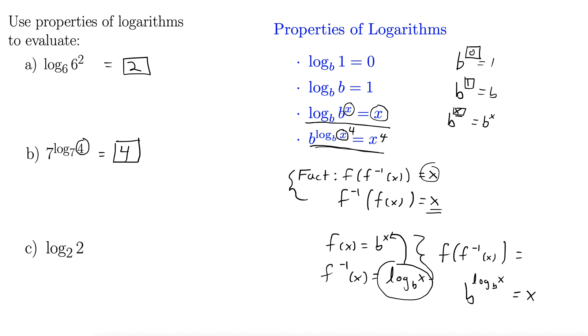Let's look at c. We have log base 2 of 2. So we have a base and then the same thing inside the logarithm as our base. Let's look at here at this second property down. Anytime you have log base b of b and they match, you automatically get 1 back. So our answer here is 1.